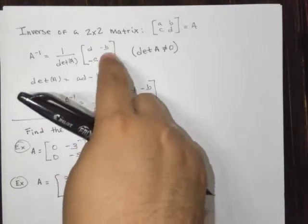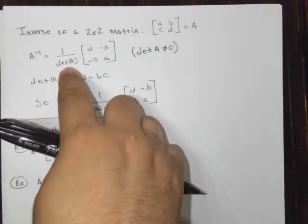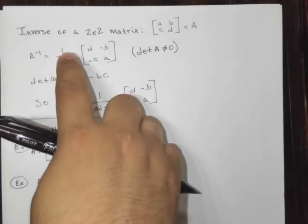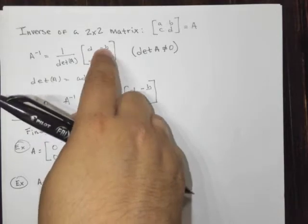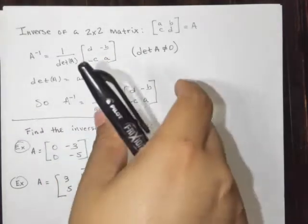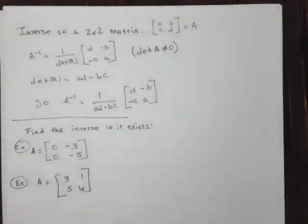Once you do that, you take 1 over the determinant. So whatever the determinant is, you take the reciprocal, and you multiply it by these numbers here inside the matrix, and then you have your inverse.